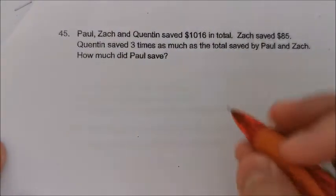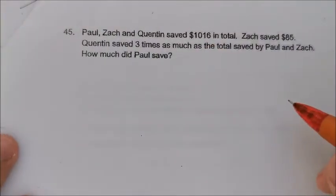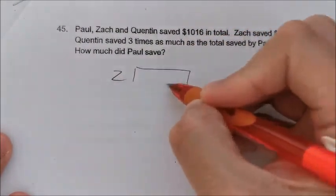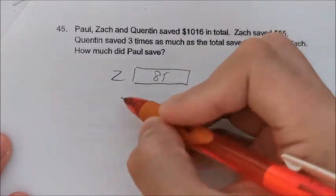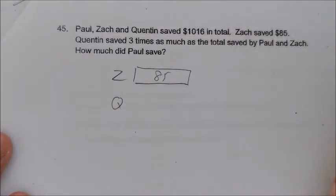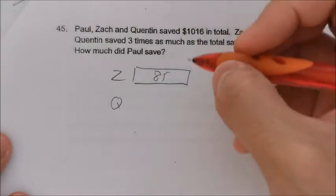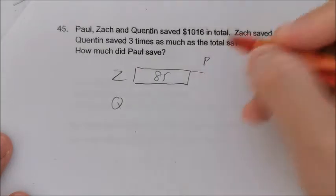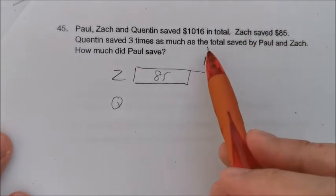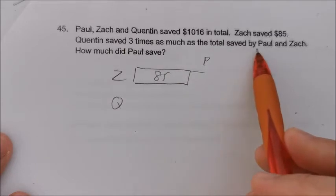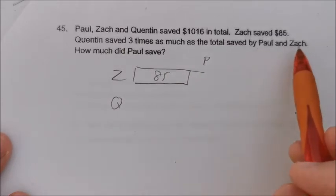So guys, we have the total. Let's draw the model. We have Zach first — Zach is $85. Then Quintin, and we let this be Paul. Because Quintin has three times as much as the total saved by Paul and Zach.